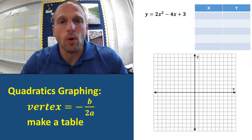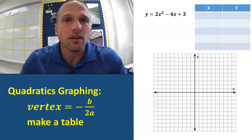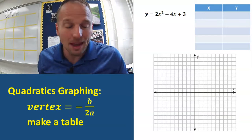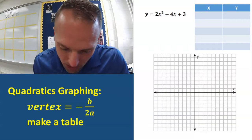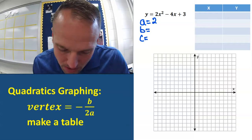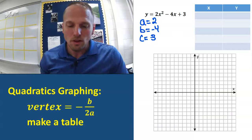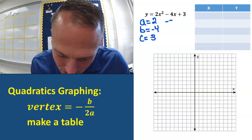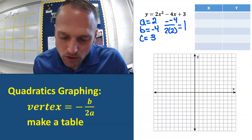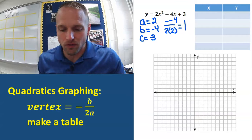The first thing we're going to have to do to graph is to find the vertex value. In order to find the vertex value, you've got to go negative b over 2a. To do that, we need to figure out what a, b, and c are. A is the number in front of x squared, b is the number in front of x, and c is the number by itself. So let's go negative b over 2a: negative negative 4 over 2 times 2. That's 4 over 4, which equals 1. That's the x value of the vertex.